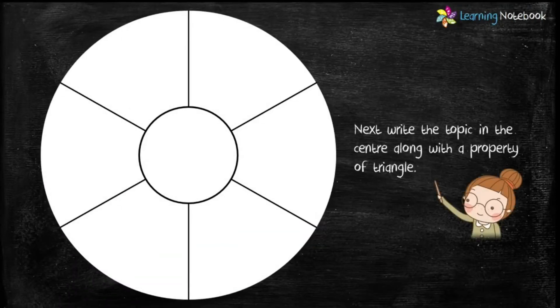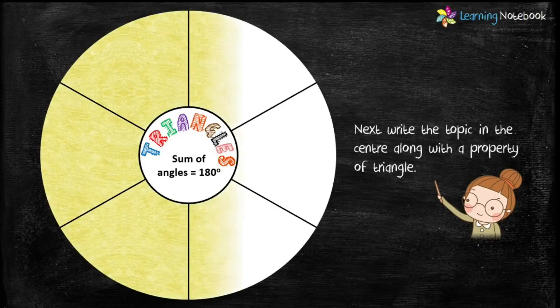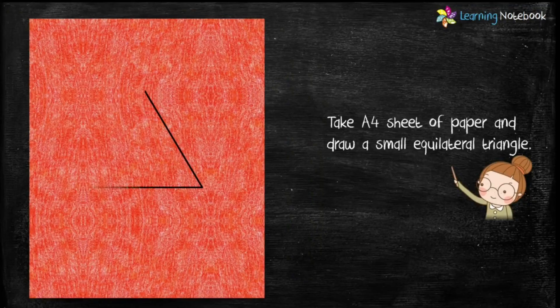Next, write the topic in the center along with the property of the triangle, which is: the sum of angles of a triangle is 180 degrees. Then color the rest of the circle. Now take an A4 sheet of paper and draw a small equilateral triangle.